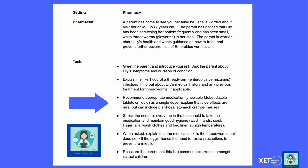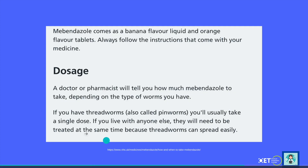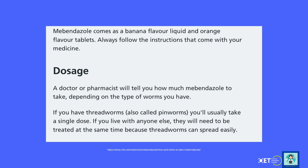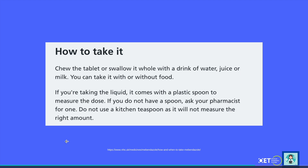For recommending appropriate medication, the NHS advises Mebendazole, which comes as a banana-flavoured liquid or orange-flavoured tablets. Always follow the instructions. If you have threadworms, you'll usually take a single dose and everyone in the house needs to be treated at the same time because threadworms spread easily. You can either chew the tablet or swallow it whole with water, juice or milk. If it's a liquid dose, use the plastic spoon provided — don't use a kitchen teaspoon as it won't measure the right amount.